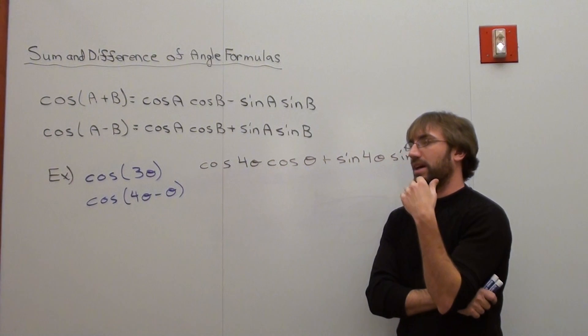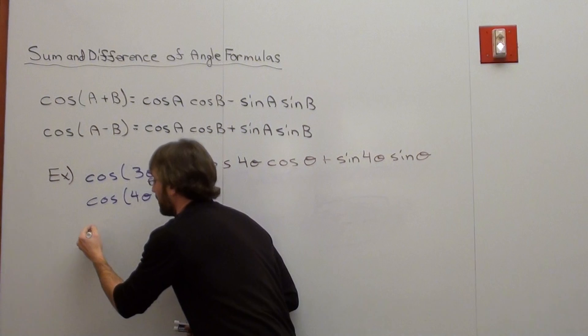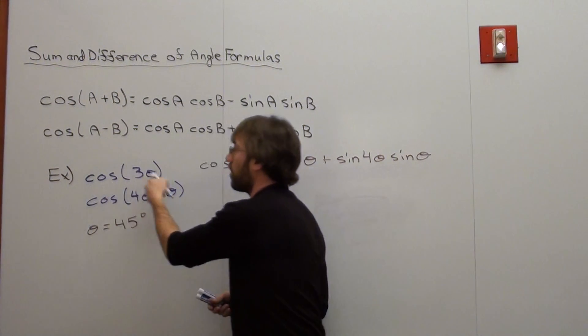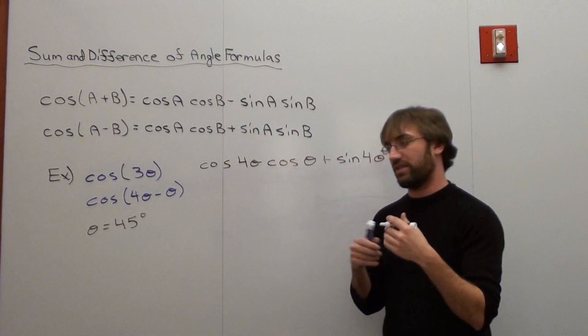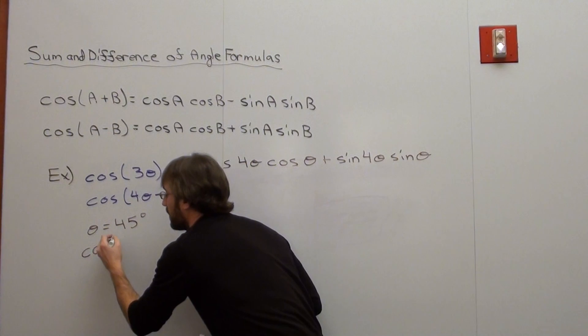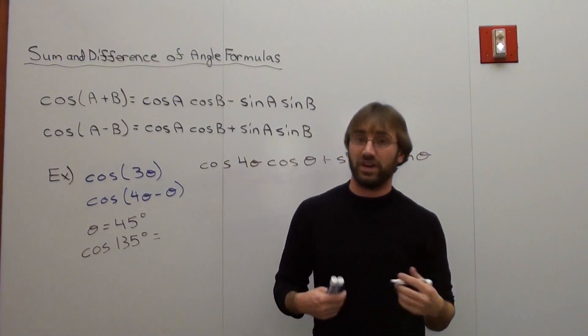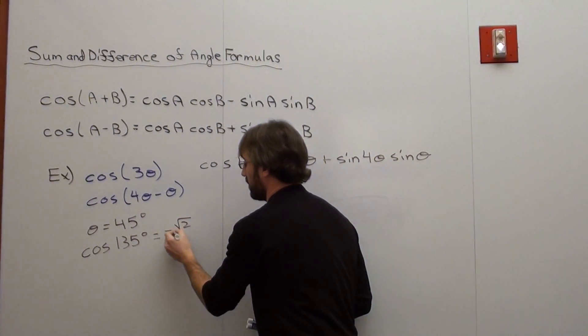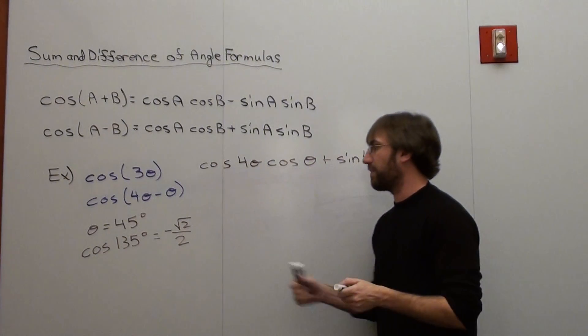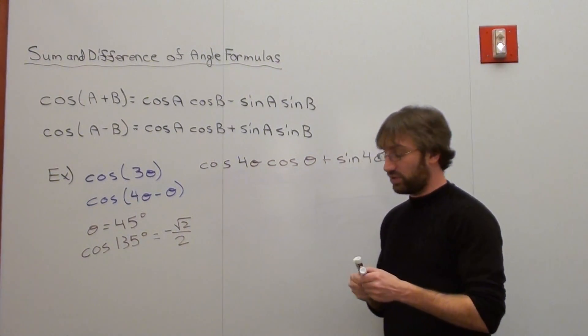Let's just assume that theta equals something easy for me to figure out. Theta equals 45 degrees. Therefore, the cosine of 3 theta is the cosine of 3 times 45, which is the cosine of 135 degrees. The cosine of 135 degrees is negative root 2 over 2. If this formula is correct, I should get negative root 2 over 2 as an answer.